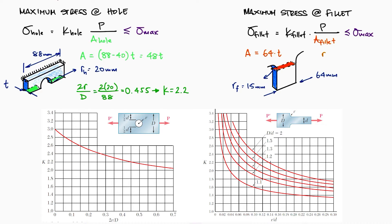For the fillet, the x-axis value will be 15 over 64, and the d over d fraction will be 88 over 64. With 0.23 on the x-axis and looking at a curve between 1.3 and 1.5, slightly closer to 1.3, we can estimate a stress concentration factor of 1.7.